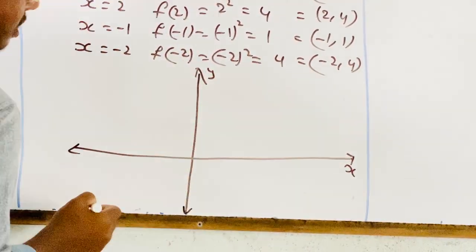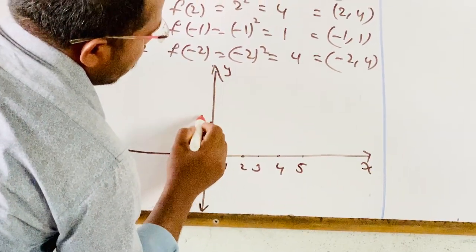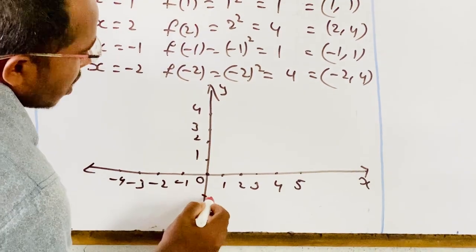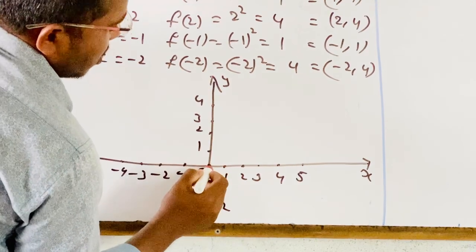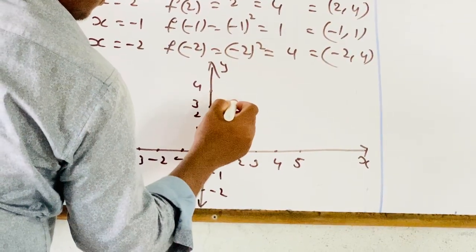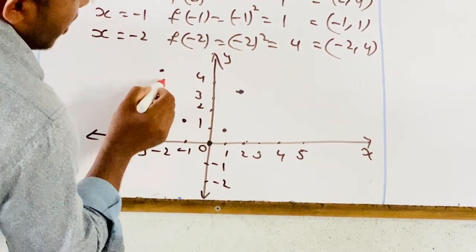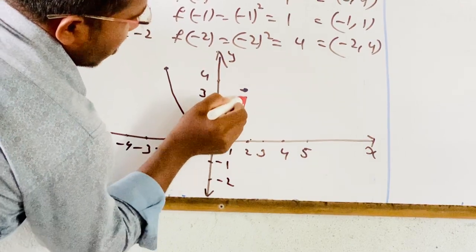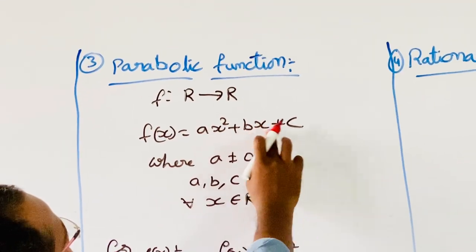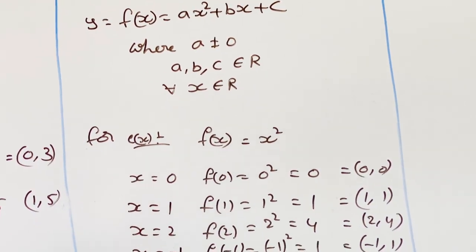Drawing the x-axis and y-axis, marking values from minus 2 to positive values, and plotting points (0,0), (1,1), (2,4), (−1,1), and (−2,4). When we join these points, we get a parabolic curve. So f of x equal to ax squared plus bx plus c is a parabolic function, where f of x represents y.